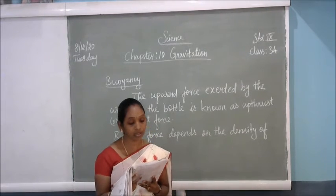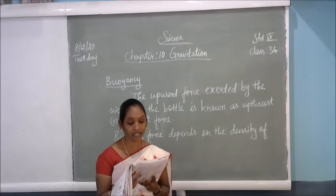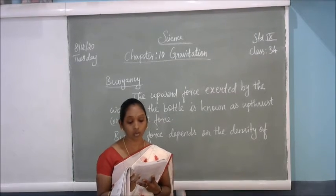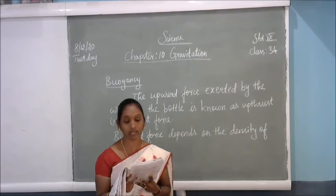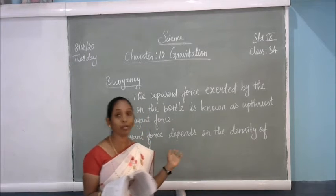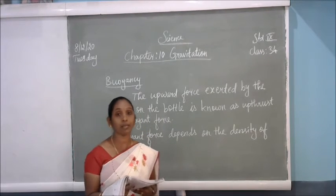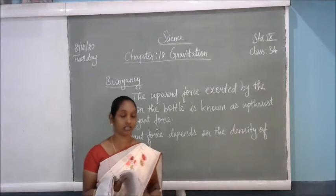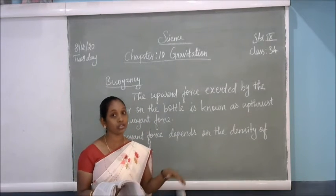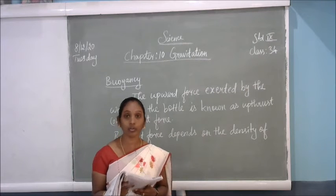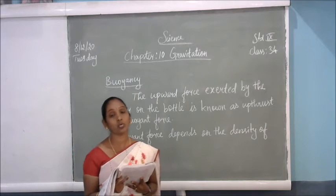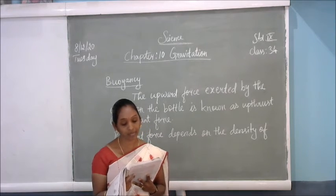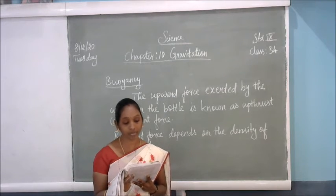Have you ever wondered why a ship made of iron and steel does not sink in seawater, but the same amount of iron and steel in the form of a sheet would sink? While we are making a ship, it is made up of iron and steel — yet the same amount of iron and steel placed flat in water sinks, while a ship floats. These questions can be answered by taking buoyancy into consideration.